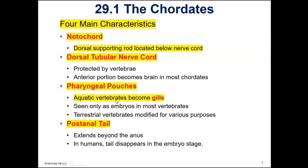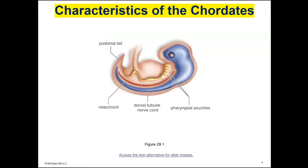All the chordates have pharyngeal pouches, which become gills in aquatic vertebrates. They're modified into other structures in the throat area and the ear area for other chordates. Then all chordates have a post-anal tail — that is a tail that extends beyond the anus. In humans, that tail is there in the early embryonic stages but then it disappears.